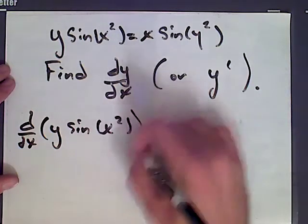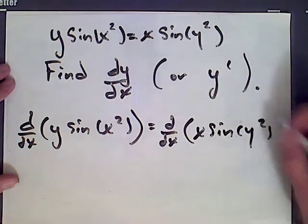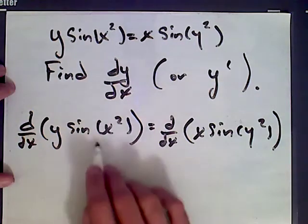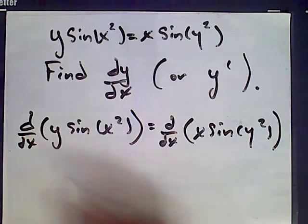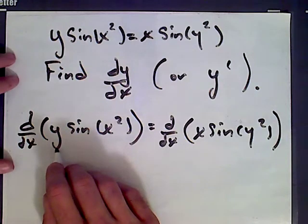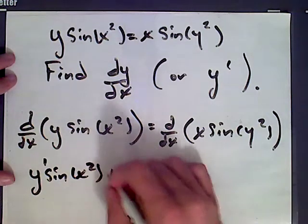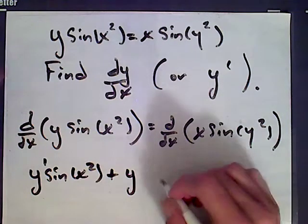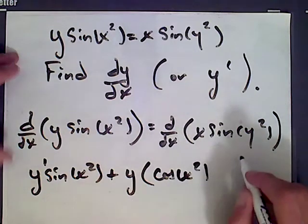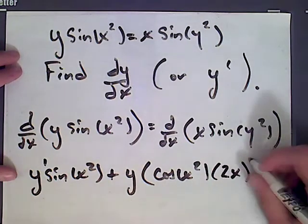If you differentiate an equation, you get an equation back. Take the derivative of the left-hand side first. We need to use the product rule, and then the chain rule when we go to differentiate the second factor. What we have is the derivative of the first factor, which is y. Now y is some unknown function of x, so we have to take its derivative. So we get y prime times sine of x squared, plus the first factor y, times the derivative of sine of x squared, which is cosine of x squared — because cosine is the derivative of sine — times the derivative of what's inside the brackets, so the derivative of x squared, which is 2x.